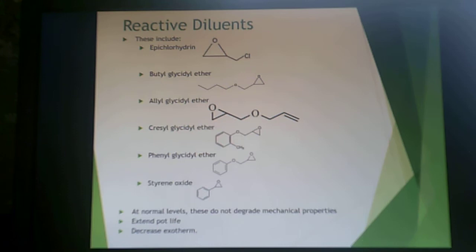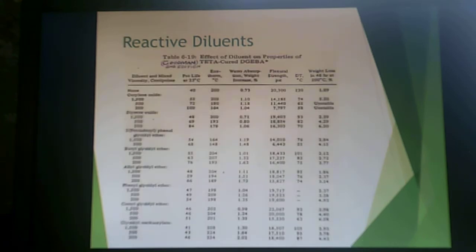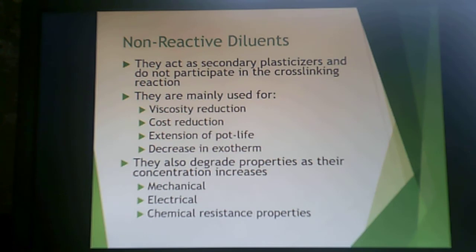A vintage figure shows the effect of incorporating a diluent on pot life, exotherm, water absorption, flexural strength, and weight loss at 200°C. Non-reactive diluents simply dilute the system; they act as secondary plasticizers and don't participate in the reaction. They are mainly used for viscosity reduction, cost reduction, extension of pot life, and decrease in exotherm.